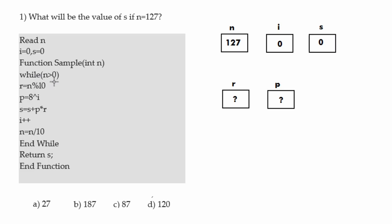The while loop condition is n greater than 0, meaning the loop iterates as long as n is greater than 0. The loop body ends with 'end while'. For n=127, the condition is true. So r equals n modulo 10, which gives us 7, stored in r. Then p equals 8 to the power i. Since i is 0, 8 to the power 0 gives us 1, so p becomes 1.